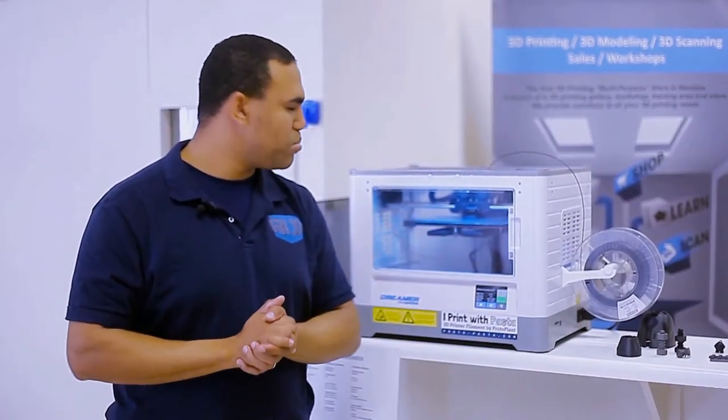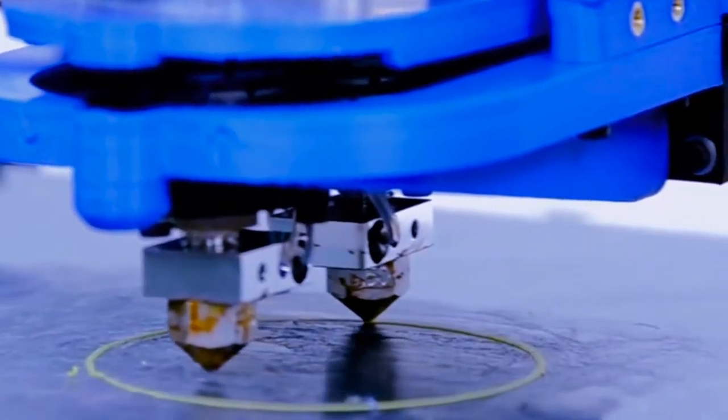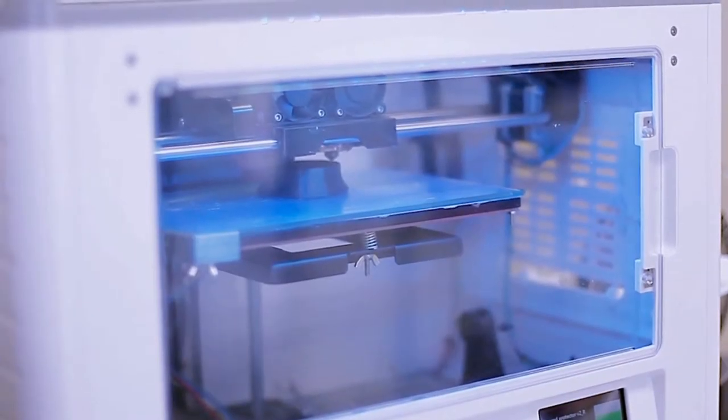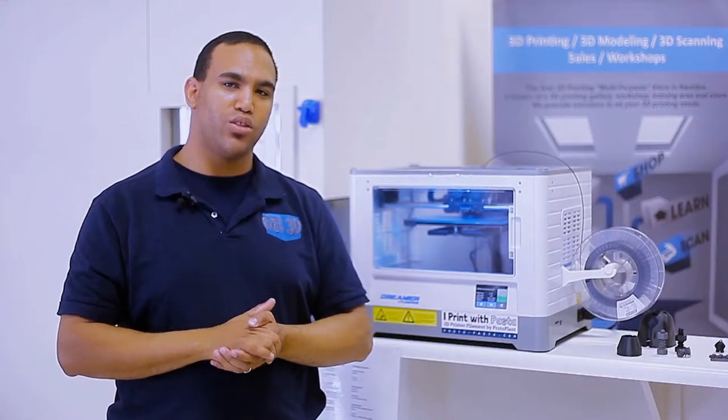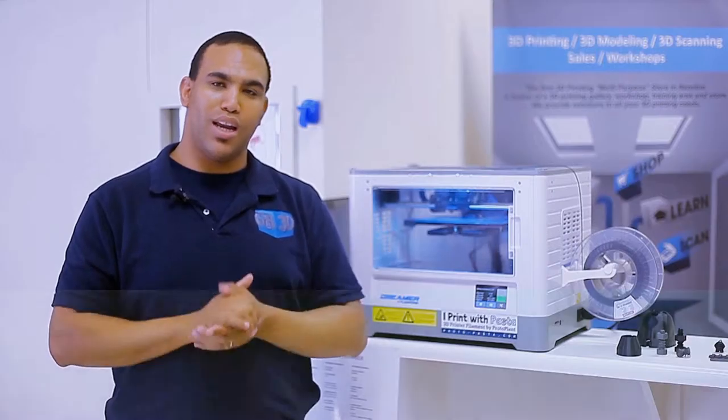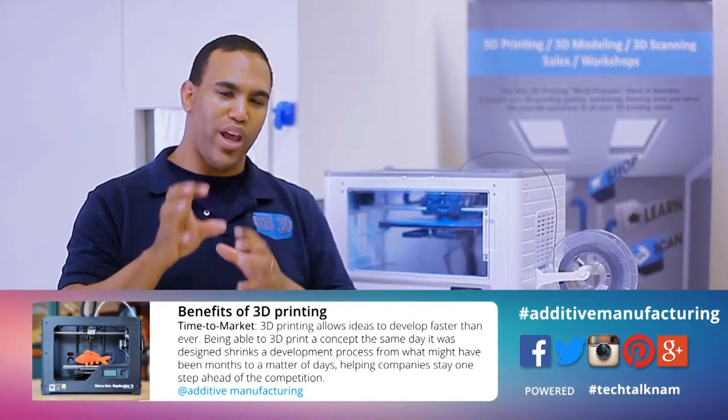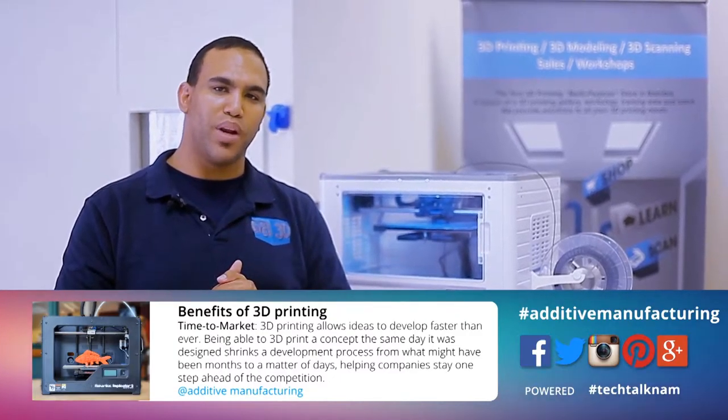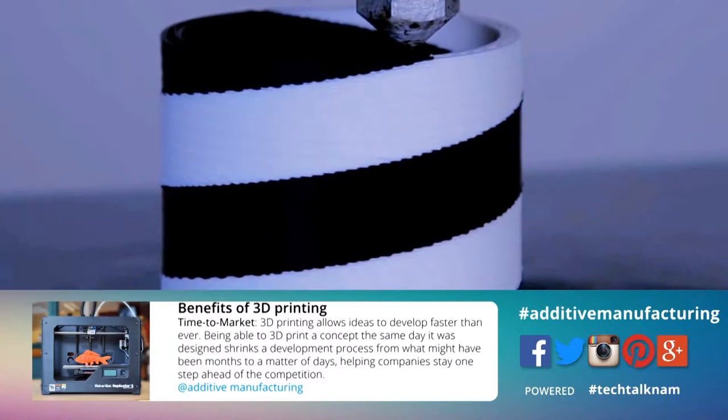This is a different machine. This machine actually has two heads, whereas the previous one that we just looked at just had one nozzle that extrudes the filament. Now this one, you can print dual colors, like the globe that I showed you previously, where you can print different colors and mix them simultaneously.